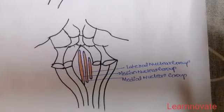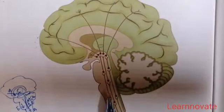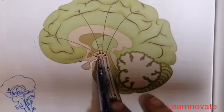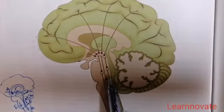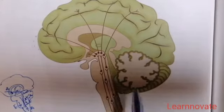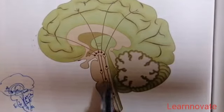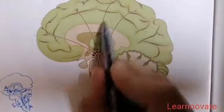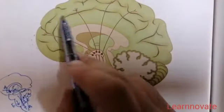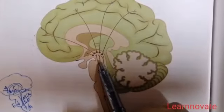Now looking at the afferent and efferent connections of the reticular formation with other areas of the central nervous system. The reticular formation extends from the spinal cord up to the midbrain, thalamus, and hypothalamus, with various connections. There are two major afferent inputs: the spinal reticular fibers connecting the spinal cord to the reticular formation, and the cerebellar reticular fibers connecting the cerebellum. Additionally, fibers connect the prefrontal lobe, motor cortex, and somatosensory or parietal cortex with the reticular formation.